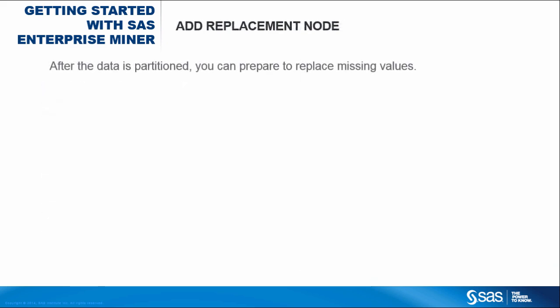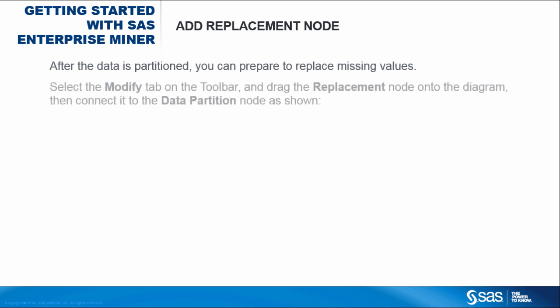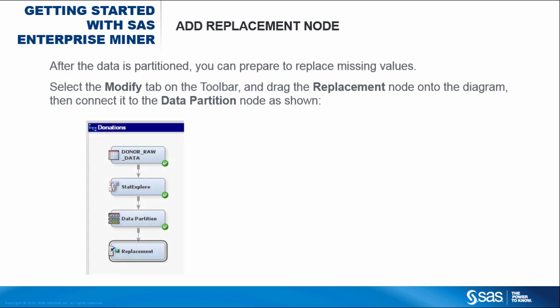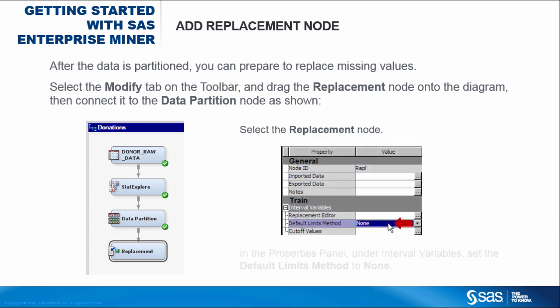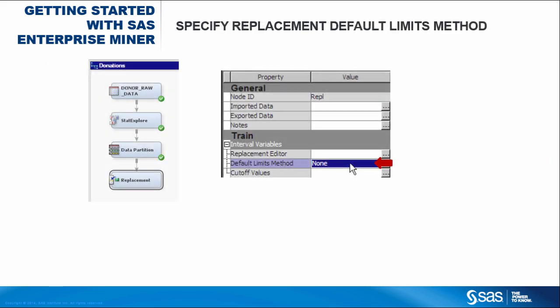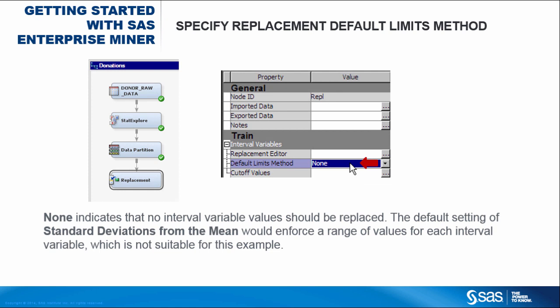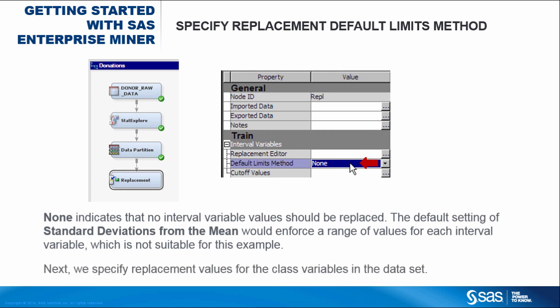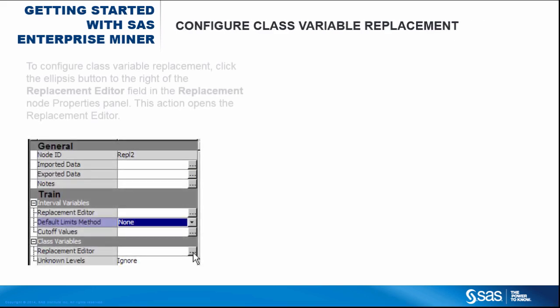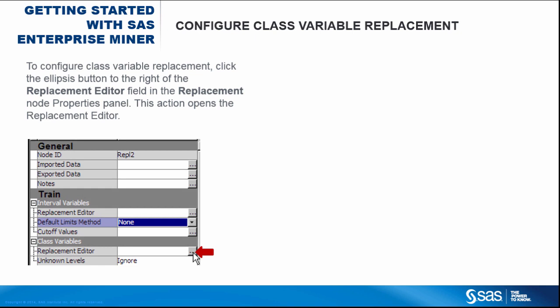After the data is partitioned, you can prepare to replace missing values. Select the Modify tab on the toolbar and drag the Replacement node onto the diagram, then connect it to the Data Partition node as shown. Select the Replacement node. In the Properties panel, under Interval Variables, set the Default Limits method to None. None indicates that no interval variable values should be replaced. The default setting of standard deviations from the mean would enforce a range of values for each interval variable, which is not suitable for this example. Next, we'll specify replacement values for the class variables in the data set by clicking the Ellipsis button to the right of the Replacement Editor field in the Replacement node Properties panel.